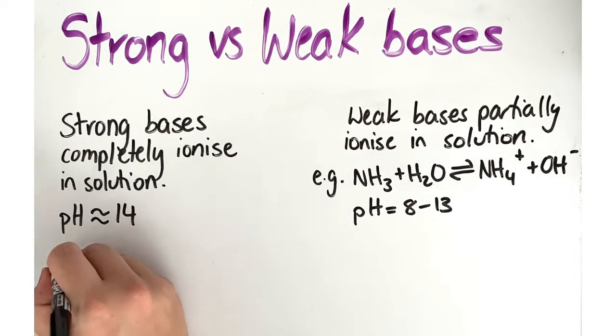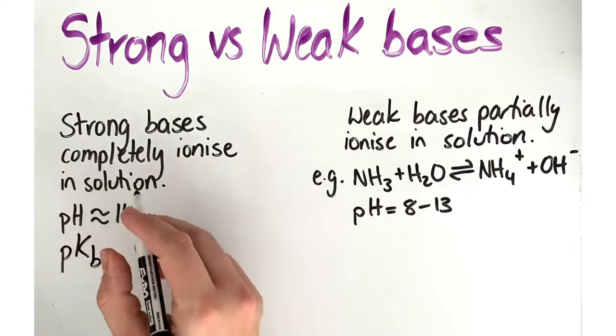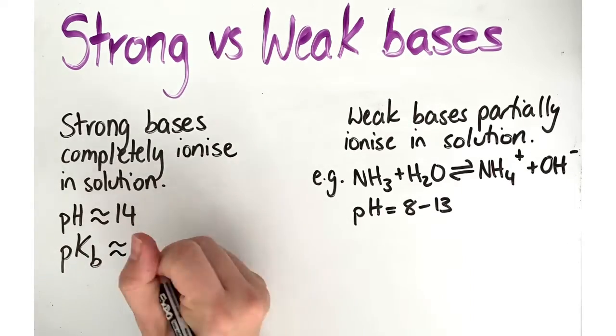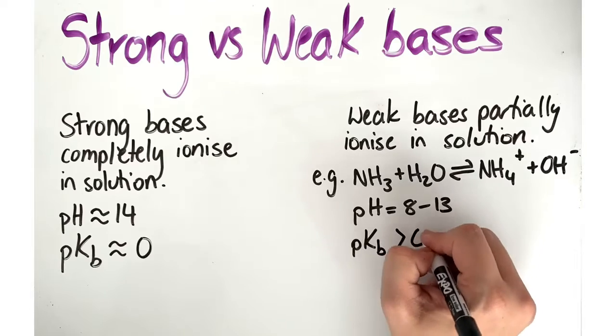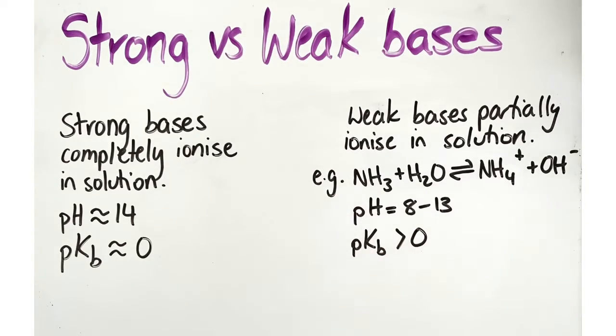The pKa value that we use for acids is similar to what we use in bases, but we call it the pKb value, denoting that we are talking about the base. So the base dissociation constant is interpreted in the same way.